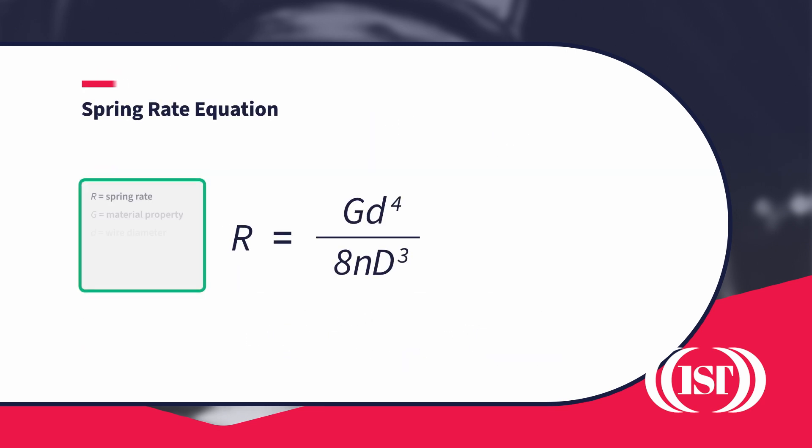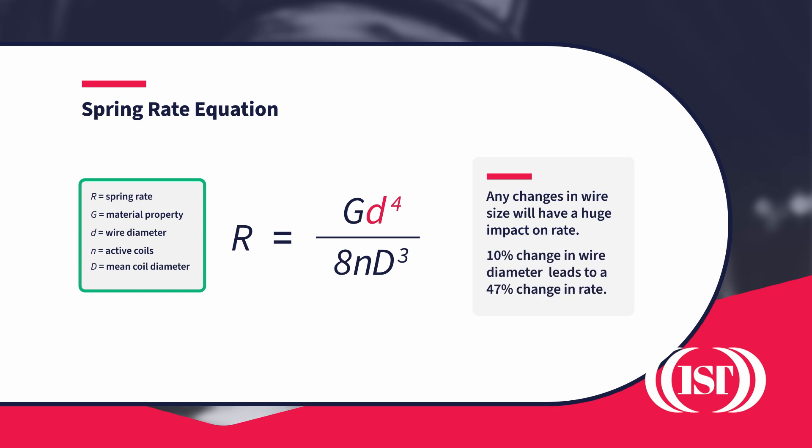You can see that because it includes wire diameter raised to the power 4, any changes in wire size will have a huge impact on rate. In fact, a 10% change in wire diameter leads to a 47% change in rate.